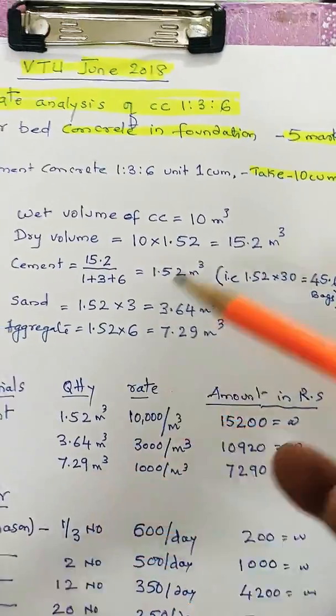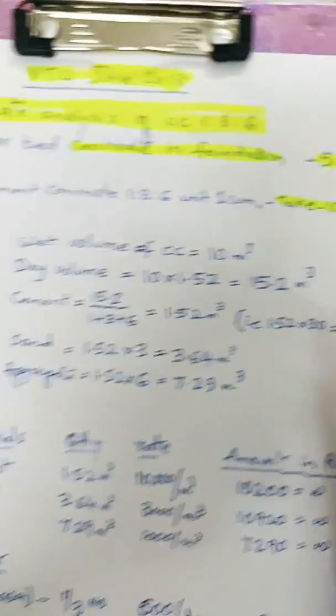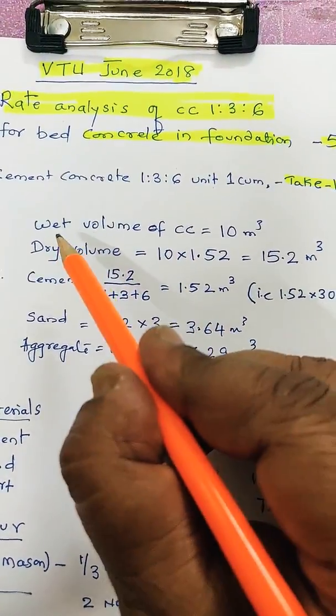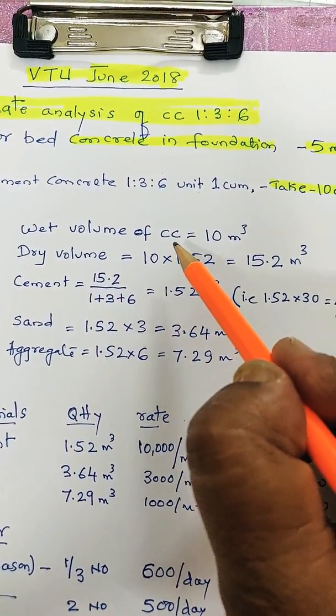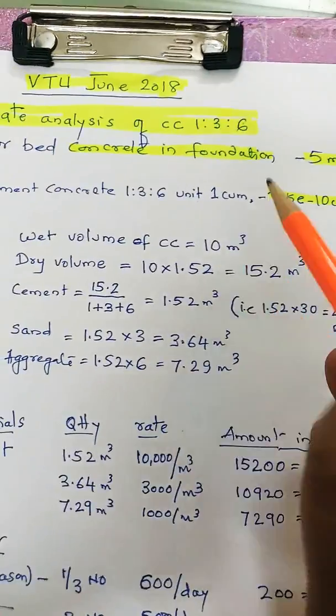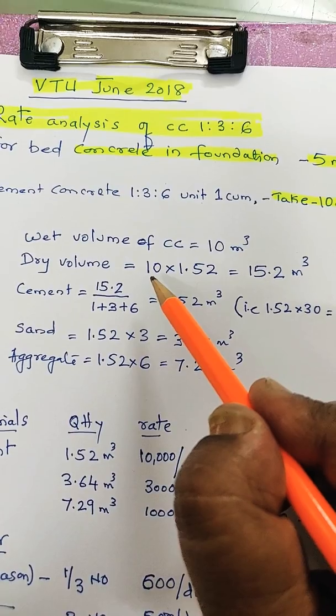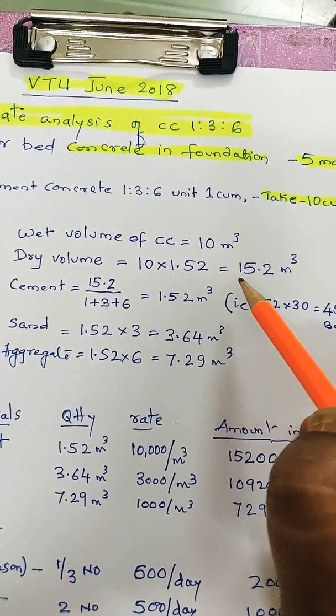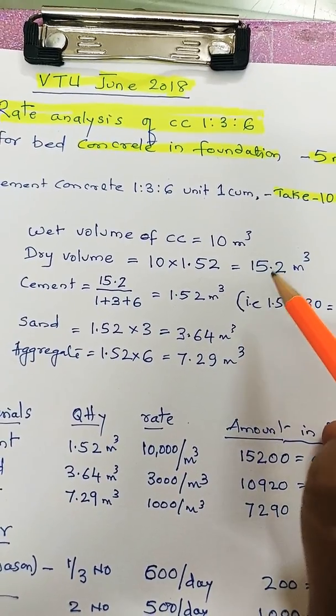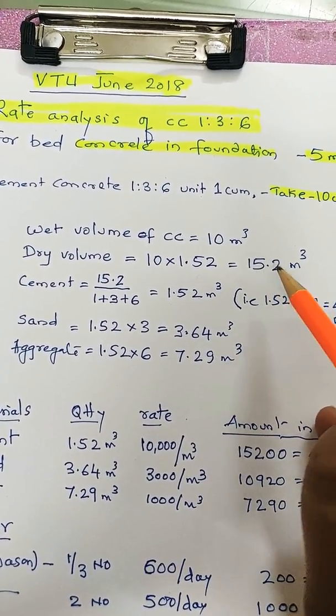Now step 1: First you take wet volume of cement concrete, that is we are considering 10 cubic meters. Then dry volume is 1.52 times the wet volume, so the dry volume will be 15.2 cubic meters. That is, before adding water we need this much quantity of materials.